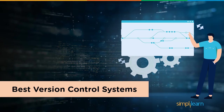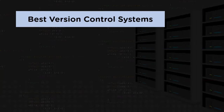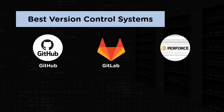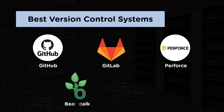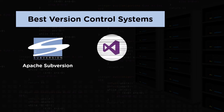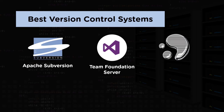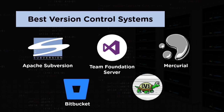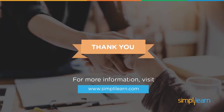Now towards the end of the video, let's have a look at some of the best version control systems in the market today. The first one is GitHub, then GitLab, followed by Perforce and Beanstalk. On number five we have AWS CodeCommit. Moving further, we have Apache Subversion, Team Foundation Server, and Mercurial. Finally, we have Bitbucket and Concurrent Versions System.